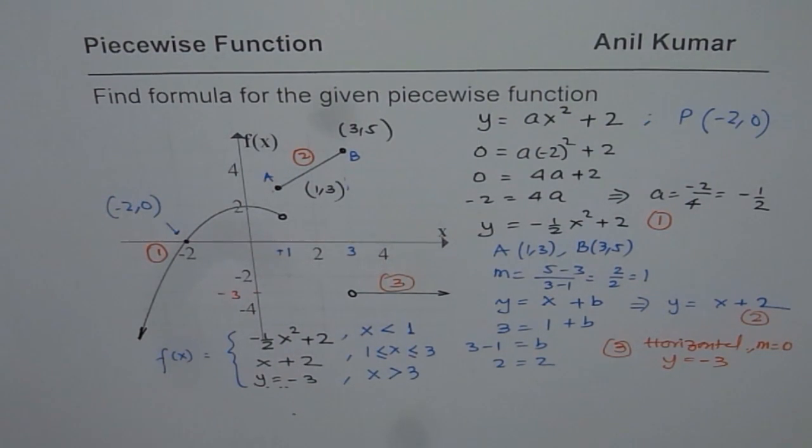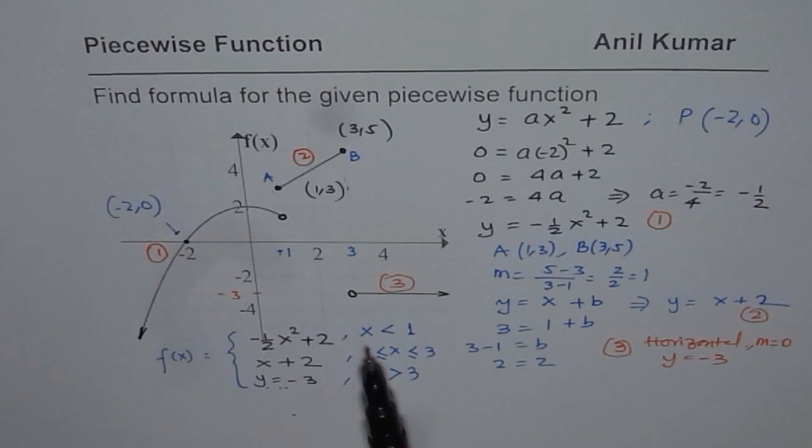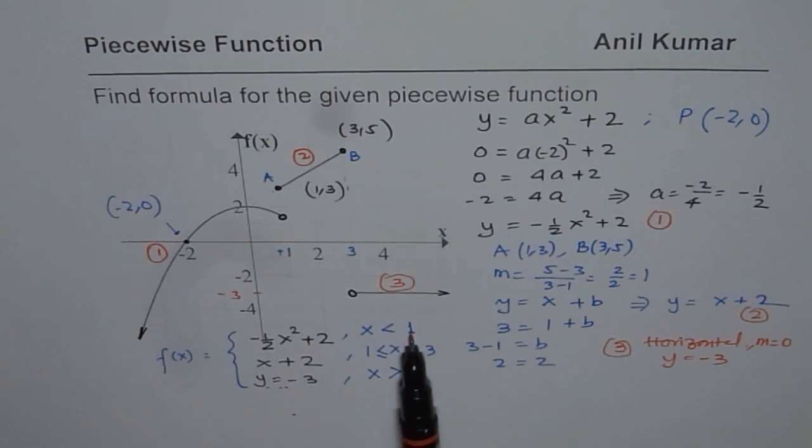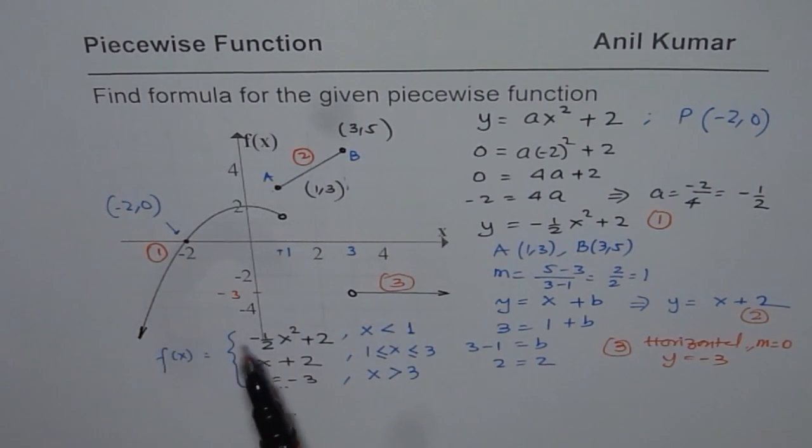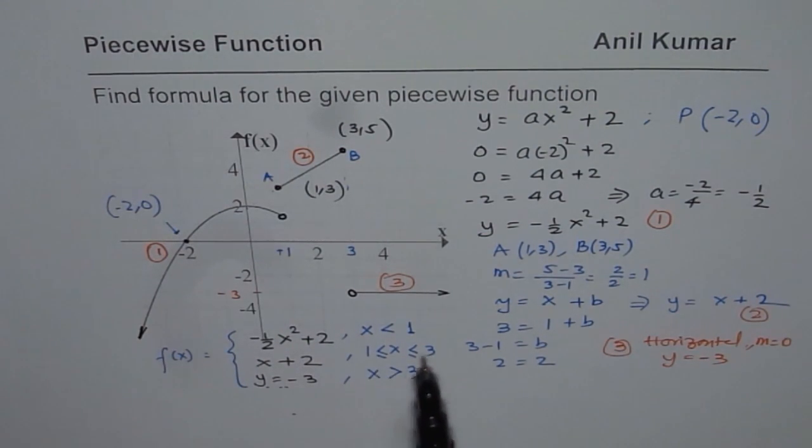Now, so we have a piecewise function here. And we can combine all these equations as given here. In the domain, which is x less than 1, the function is like a parabola, minus half x squared plus 2, in between 1 and 3, both included. It is a straight line.